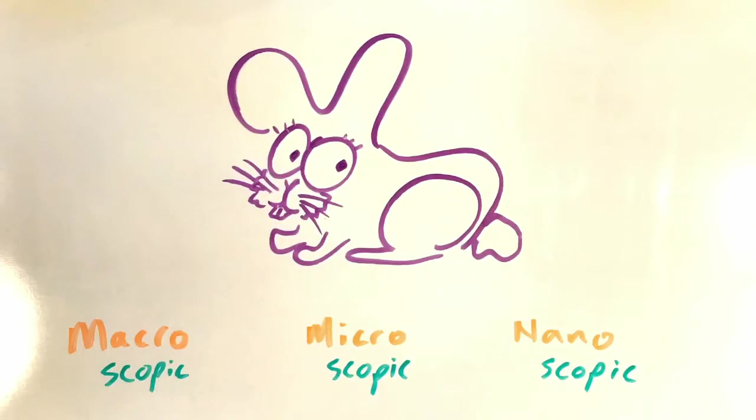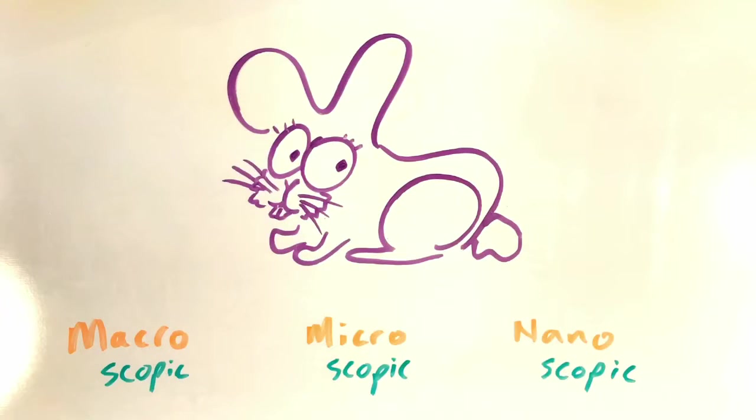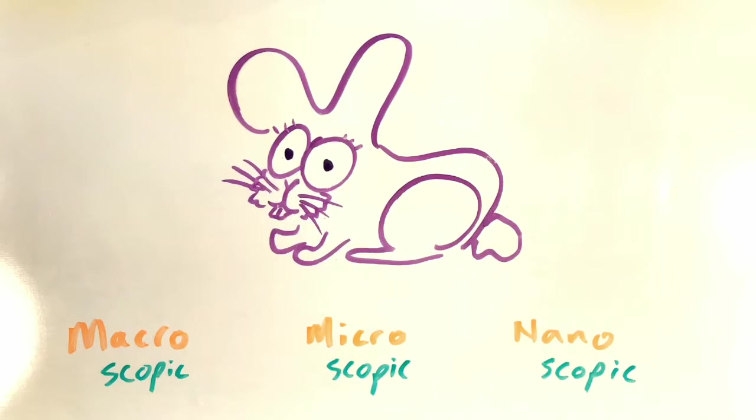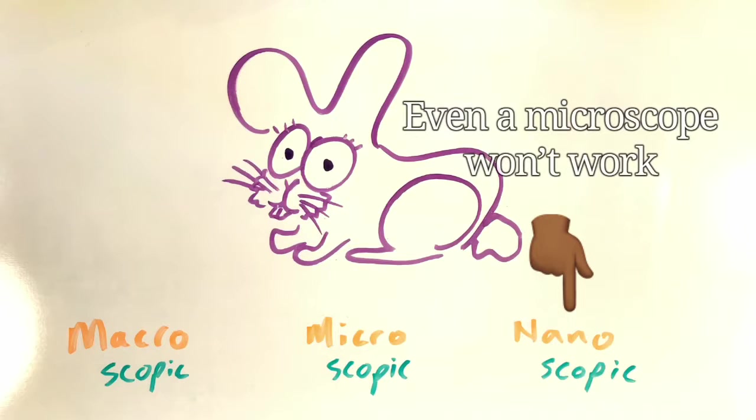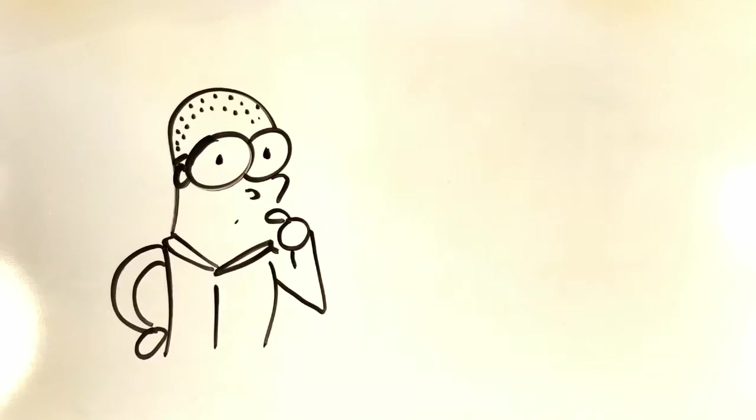Something that's macroscopic is something big enough to see with the naked eye, for instance this bunny. Something that's microscopic is something so small that you need a microscope to see it. Cells are a good example. And something that's nanoscopic is something so small that even a microscope can't see it. So atoms and molecules would be an example of something that's nanoscopic.